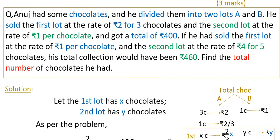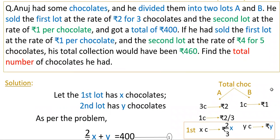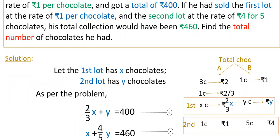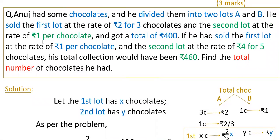Anus had some chocolates and divided them into two lots A and B. Let x be the number of chocolates in lot A and y in lot B. In the first lot, 3 chocolates cost 2 rupees, so 1 chocolate costs 2/3 rupees, and x chocolates cost (2/3)x rupees. In the second lot, 1 chocolate costs 1 rupee, so y chocolates cost y rupees.